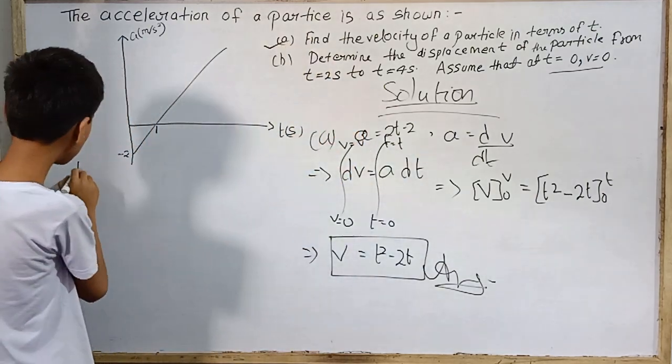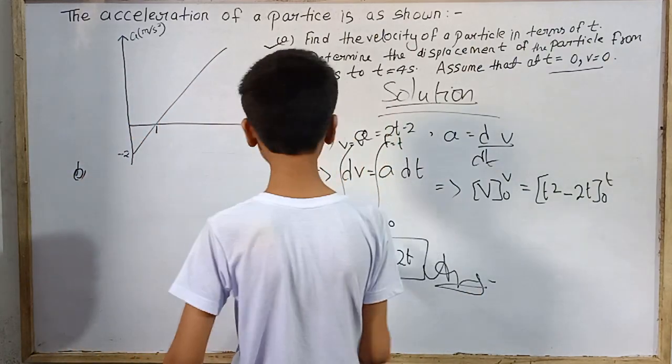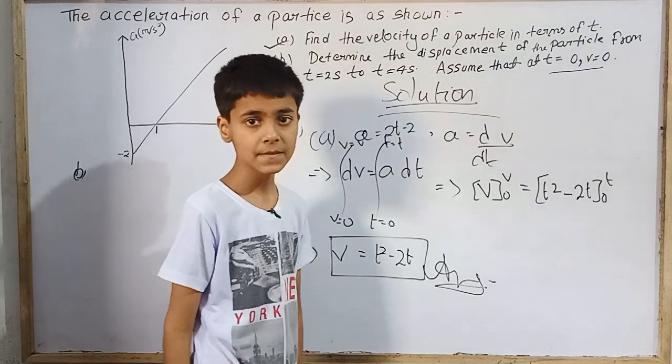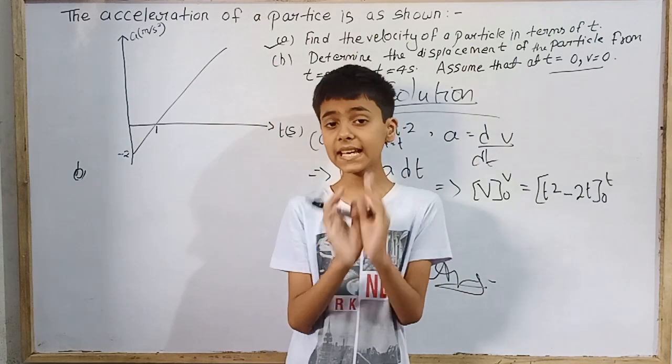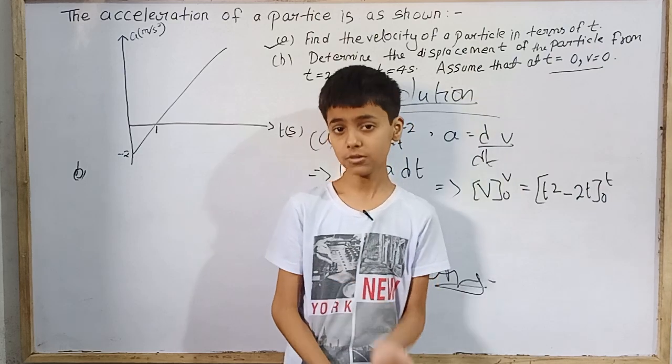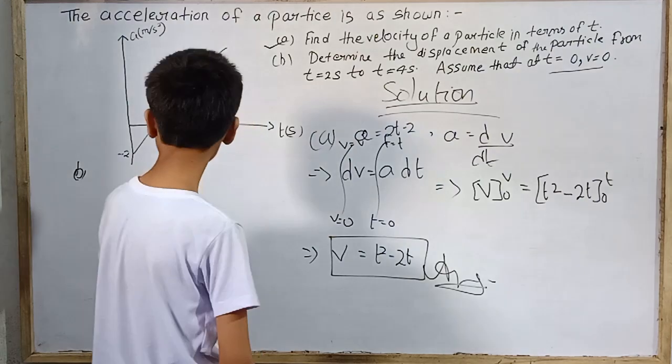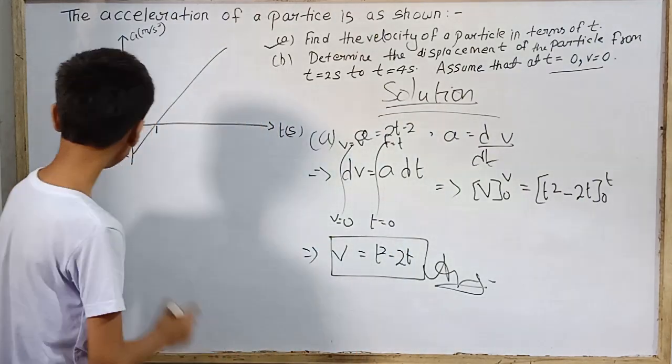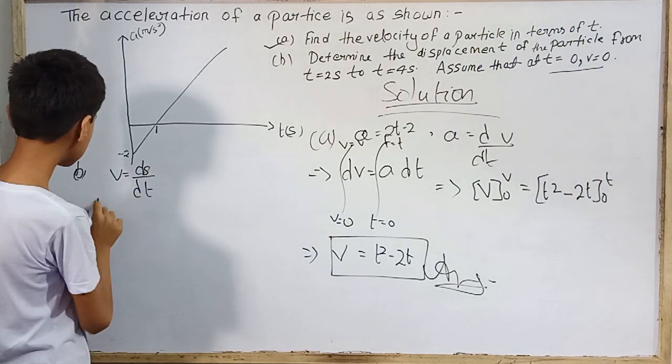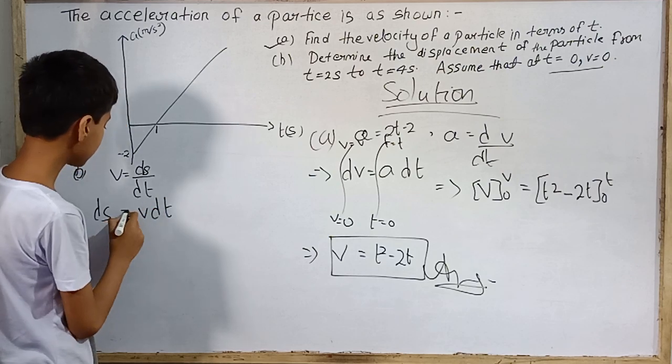If we come to problem number B, we have to tell about the displacement of the particle from a certain instant to another instant - from 2 seconds to 4 seconds. So we take the formula of displacement. We know that v is ds by dt, so ds equals v dt.